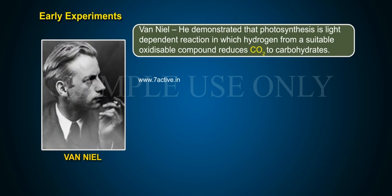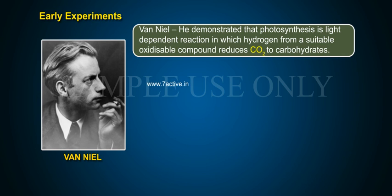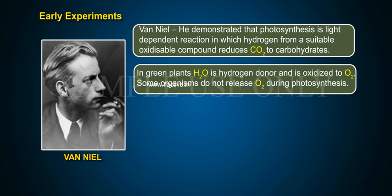Van Niel demonstrated that photosynthesis is a light-dependent reaction in which hydrogen from a suitable oxidisable compound reduces CO2 to carbohydrates. In green plants, H2O is the hydrogen donor and is oxidized to O2. Some organisms do not release O2 during photosynthesis.